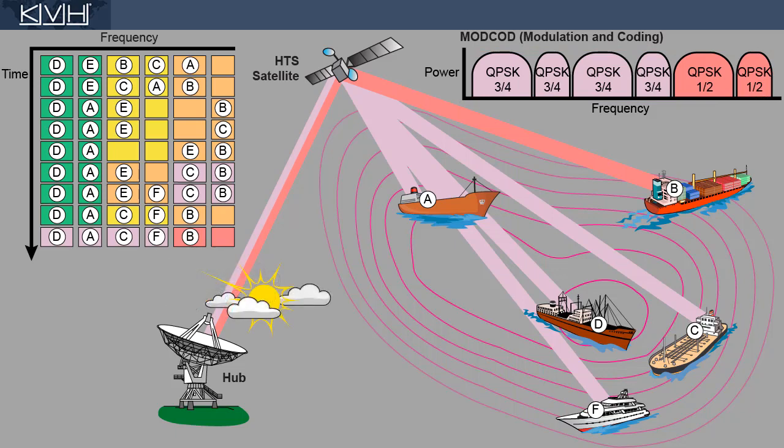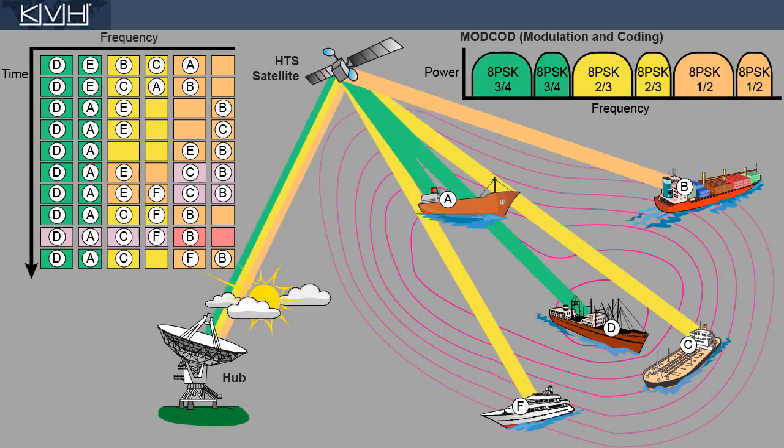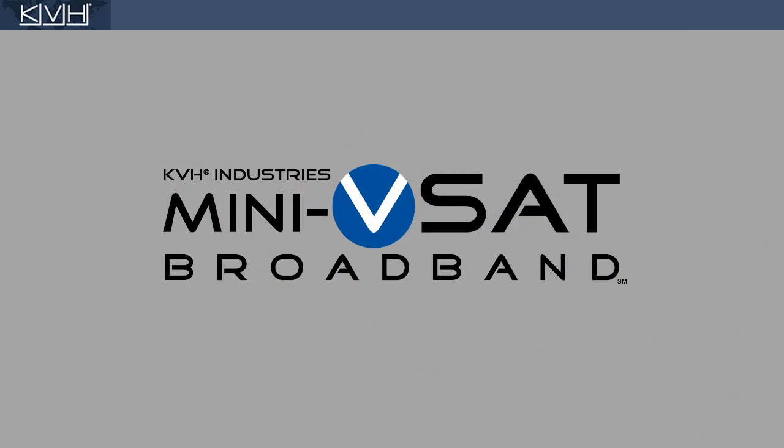When the storm passes, the hub switches back to the in-route group that best matches the vessel's current conditions. This concludes our brief overview of Adaptive TDMA, a key advantage of the Mini-VSAT broadband HTS network.